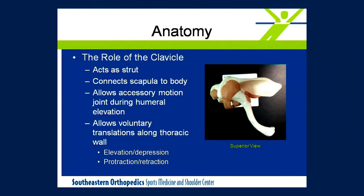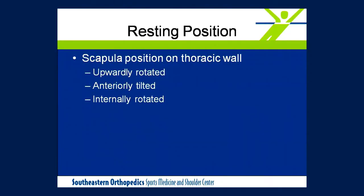The clavicle plays a very crucial role in the function of the scapula. It acts as the piece that connects the bony structure of the scapula to the rest of the body, of course at the acromioclavicular joint. At the AC joint, this allows for both voluntary and accessory motion of the scapula along the thoracic wall. The resting position of the scapula is one of slight upward rotation, anterior tilt, and internal rotation.